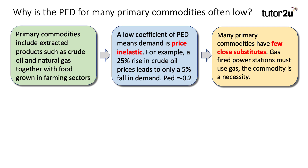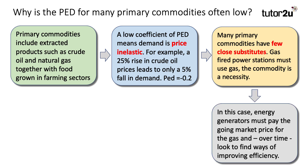Many primary commodities have a low PED because they have few close substitutes. Gas-fired power stations, for example, must use gas. The commodity is a necessity, and as you know, products which are necessities tend, other things being the same, to have a low price elasticity of demand.